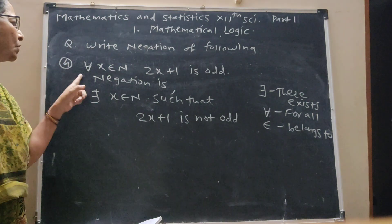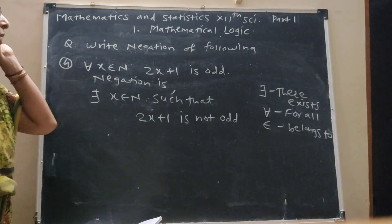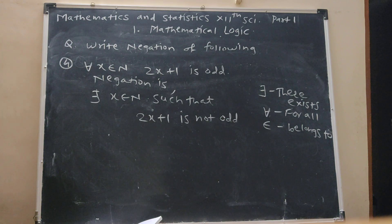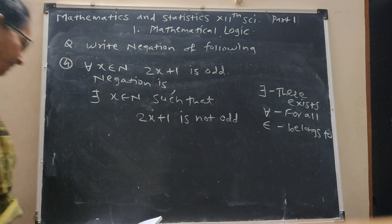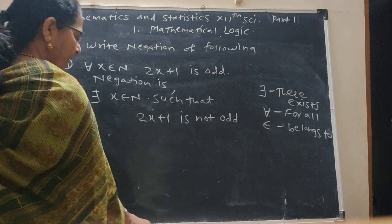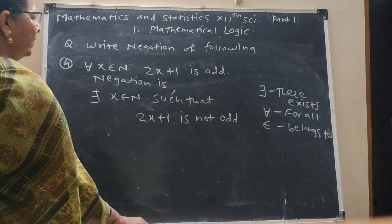So remember, these two are really important negations: 'there exists' changes to 'for all', and 'for all' changes to 'there exists'. Next point: dual statements.